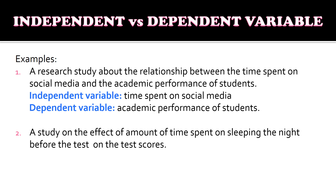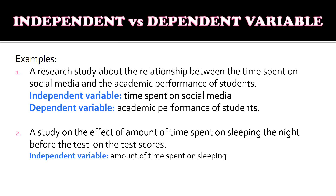For example number two, a study on the effect of the amount of time spent on sleeping the night before the test on the test scores. The independent variable is the amount of time spent on sleeping — this is a variable that can be manipulated. The dependent variable is the test score. The test scores depend on the amount of time spent on sleeping; if you sleep longer, your test scores would be higher, or if you sleep a short period of time, your test score might be lower.